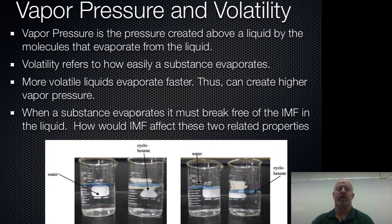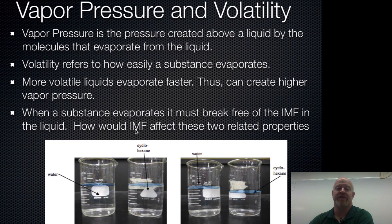We actually get an inverse relationship here — for the first time. The stronger the intermolecular force, the better it holds things together, which means it won't evaporate very well. The vapor pressure will be low, and it will be a less volatile substance.